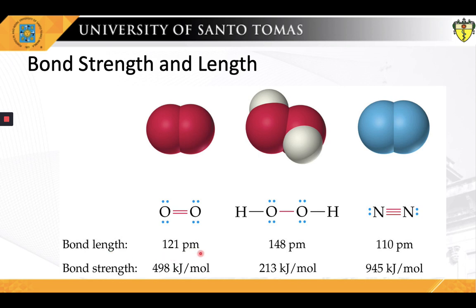A picometer is a unit of length in the metric system equal to one trillionth of a meter. As we can see, the greater the number of bonds between atoms — for example, in molecules with double or triple bonds — the stronger their bond strength, and consequently the shorter their corresponding bond length. Please feel free to pause the presentation to take the time to associate the relationships between bond strength and bond length.